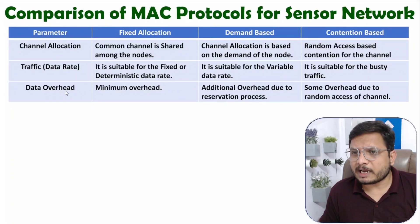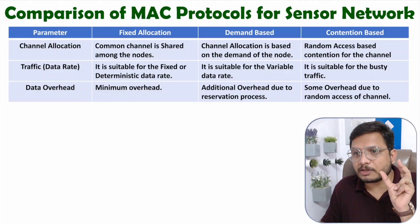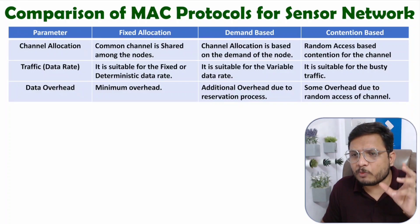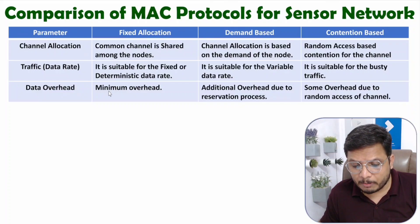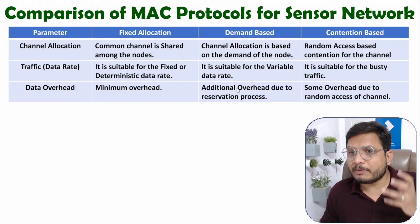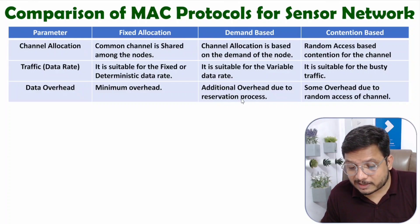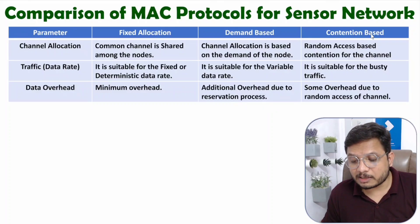Data overhead means extra data added along with the actual data — for example, overhead of source, destination, routing, and security. In fixed allocation, minimum overhead is there. In demand-based allocation, additional overhead is added because of the reservation process, since some MAC protocols require channel reservation. In contention-based, some overhead is there due to random access of the channel.